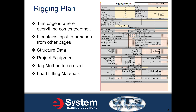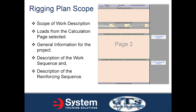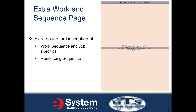The rigging plan page is where everything comes together. It contains input information from the other pages, the structure data, the project equipment, the tag method to be used, and the load lifting materials planned for the project. Further down on the same sheet is a location for the scope of work description, the loads from the selected calculation page, general project information, description of the work sequence, and description of a reinforcing sequence. If you don't have enough room on either the work or reinforcing sequence sections, there's an extra page that provides additional space.